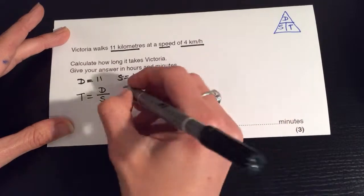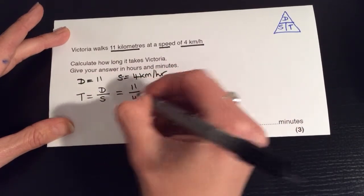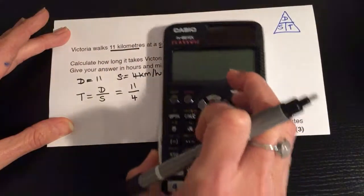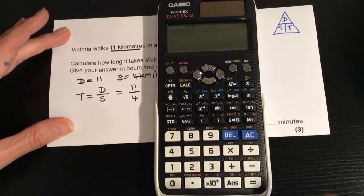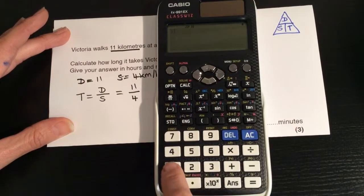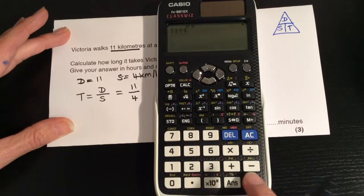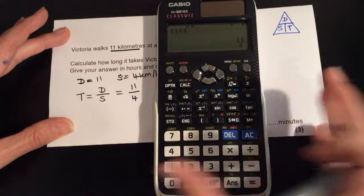Now if we enter these values, distance is 11 divided by 4, and we take out our calculator. So 11 divided by 4 equals. Now it gives us, it gives us as an improper fraction.